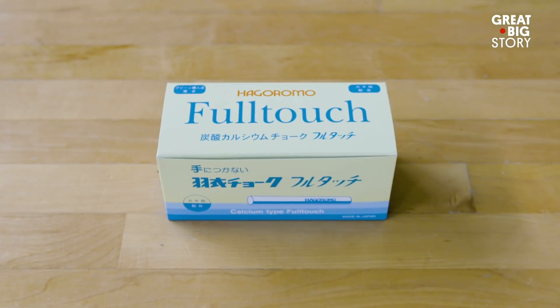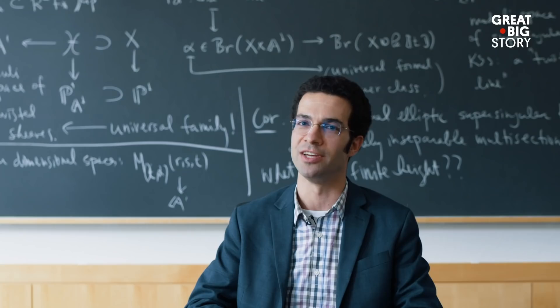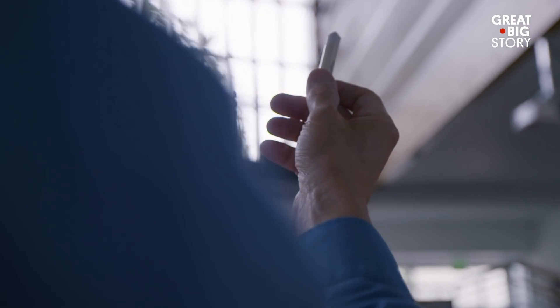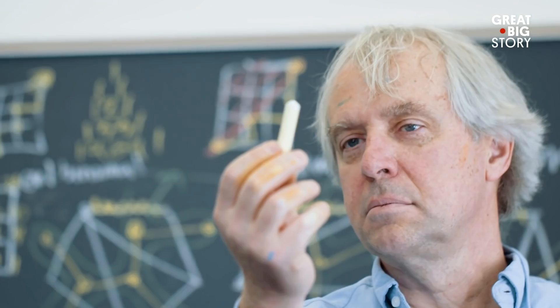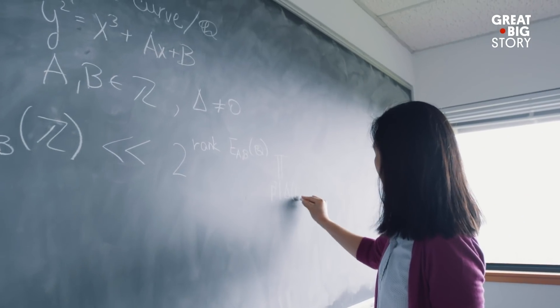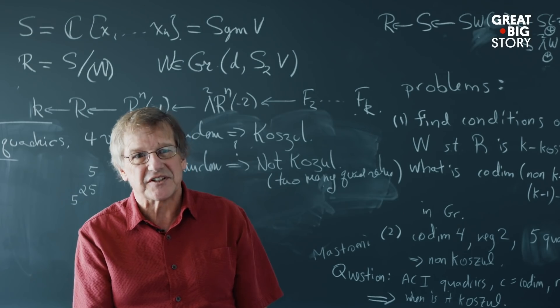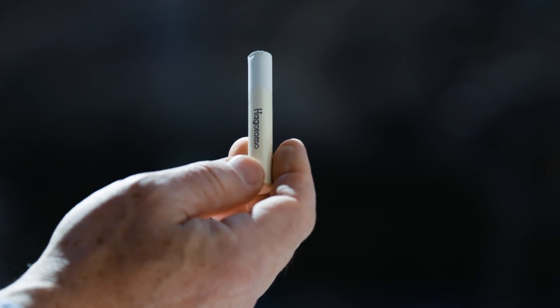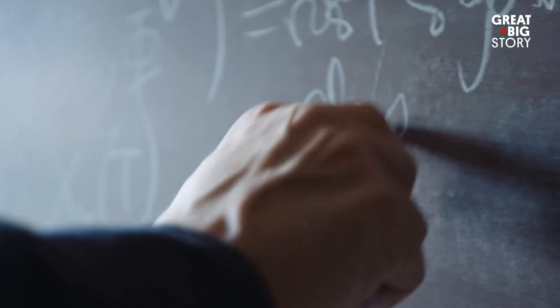The legend around this chalk is that it's impossible to write a false theorem — the special ingredient is supposedly angel tears. Mathematicians from all the top schools very frequently use it. It's a cult favorite. As soon as I used it, I was a convert. The chalk is one of the best-kept secrets in the math world. It's the Rolls-Royce of chalk. Hagoromo is a brand of Japanese chalk, and the way it flows on a board is a bit hard to describe in words.